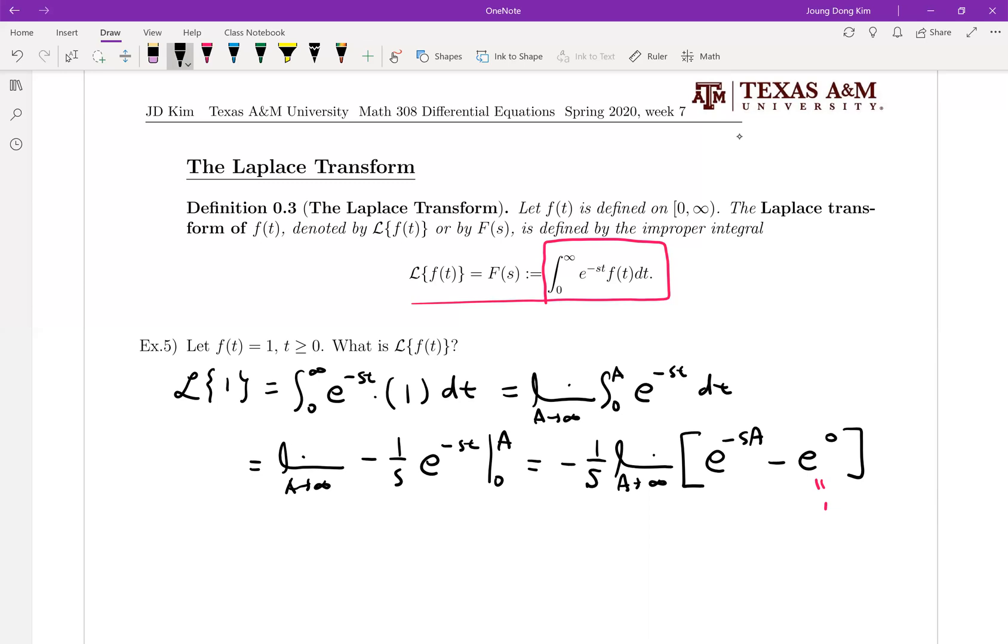That is the meaning. There is a meaning over this. It is equal to minus 1 over s times 0 minus 1, which is 1 over s.